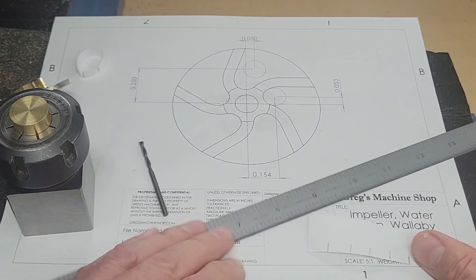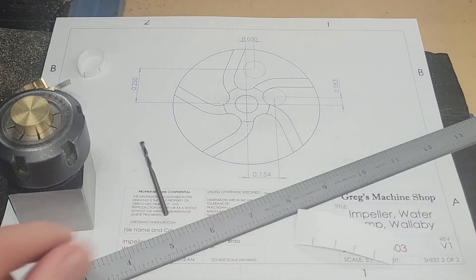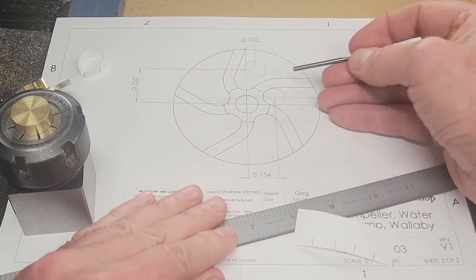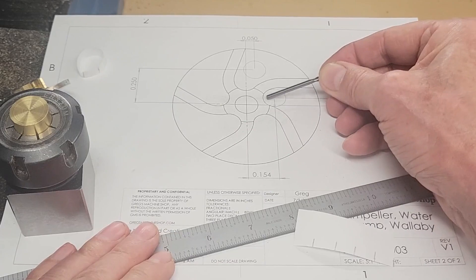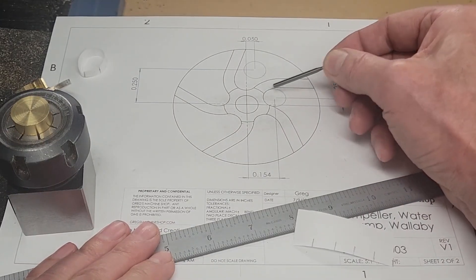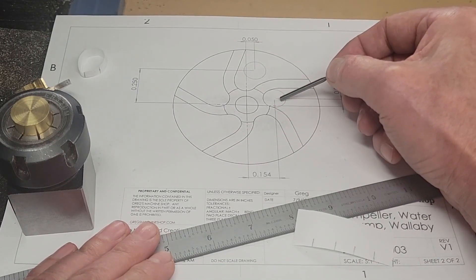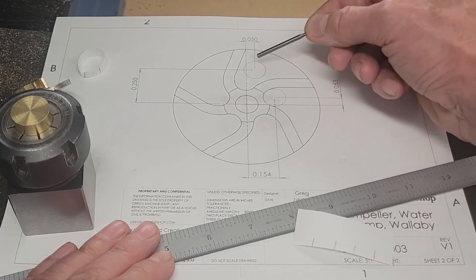on page two, notice that there's two 1/8 inch round circles marked here and here. What we're going to do is we're going to find the center of our stock in the mill.